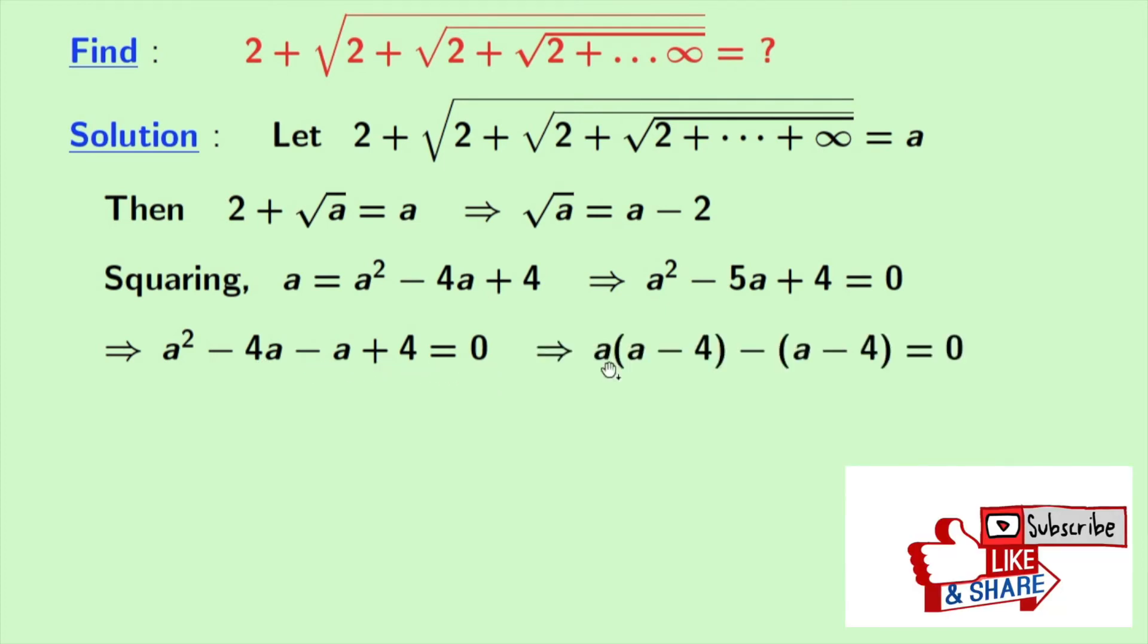Now take a common from the first two parts. And we get a times a minus 4. And from the second two terms we get minus of a minus 4. And in the right hand side again is 0. Now look that a minus 4 is common here. So we get a minus 4 times a minus 1 is equal to 0.